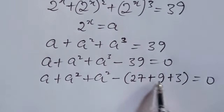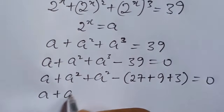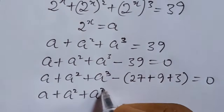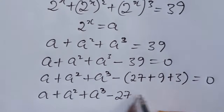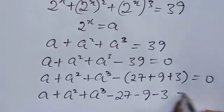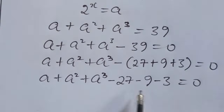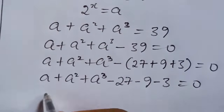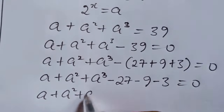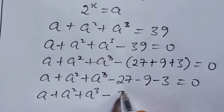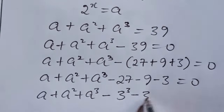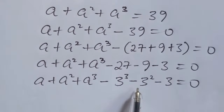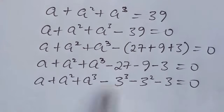So let's open the brackets. Let's simplify 27 and 9. I will simplify this.